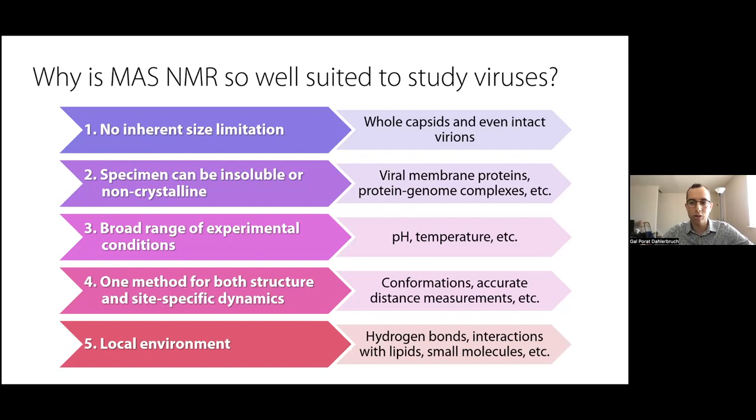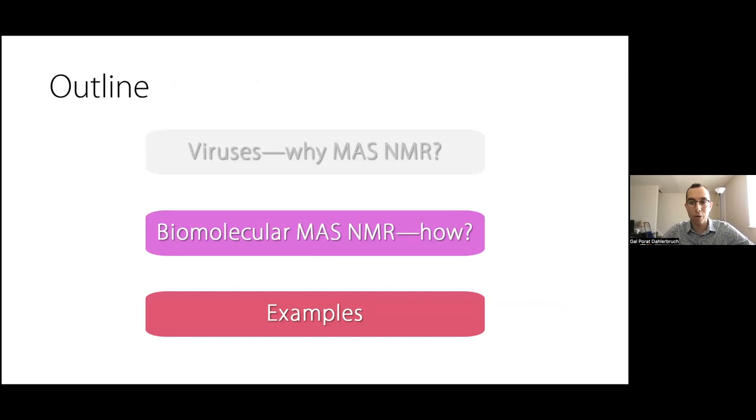Overall, MAS NMR offers a comprehensive toolbox to study biomolecular assemblies, providing a broad range of experimental conditions and physicochemical information. For viruses, MAS NMR allows investigation of large complexes like capsids or intact virions with remarkable resolution and wealth of information. The only question is how we do that with magic angle spinning NMR.